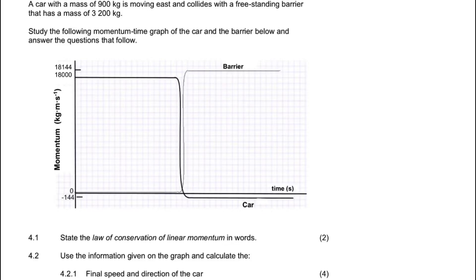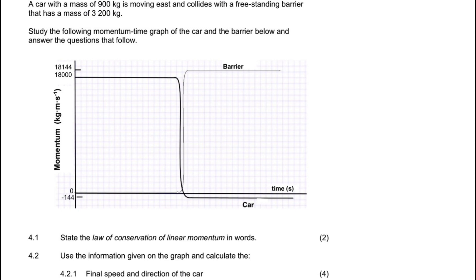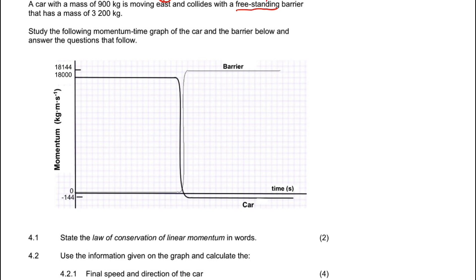Here's another question on momentum and impulse. A car with a mass of 900 kilograms is moving to the east and it collides with a freestanding barrier that has a mass of 3200 kilograms. Looking at the graph, the motion of the car is shown along the x-axis in the positive direction, so east is positive. The car is moving east and collides with the barrier, which has an initial velocity of zero.